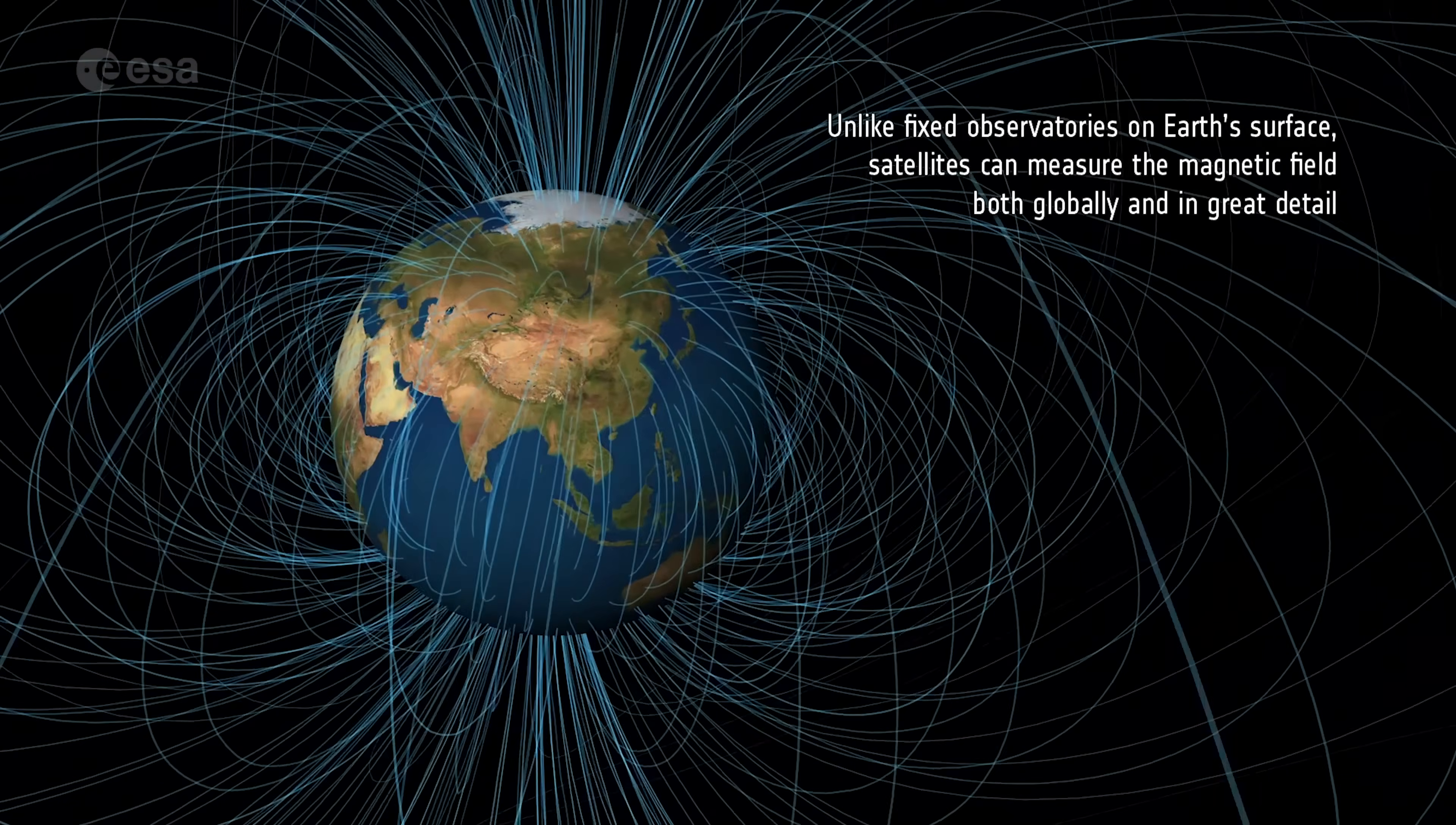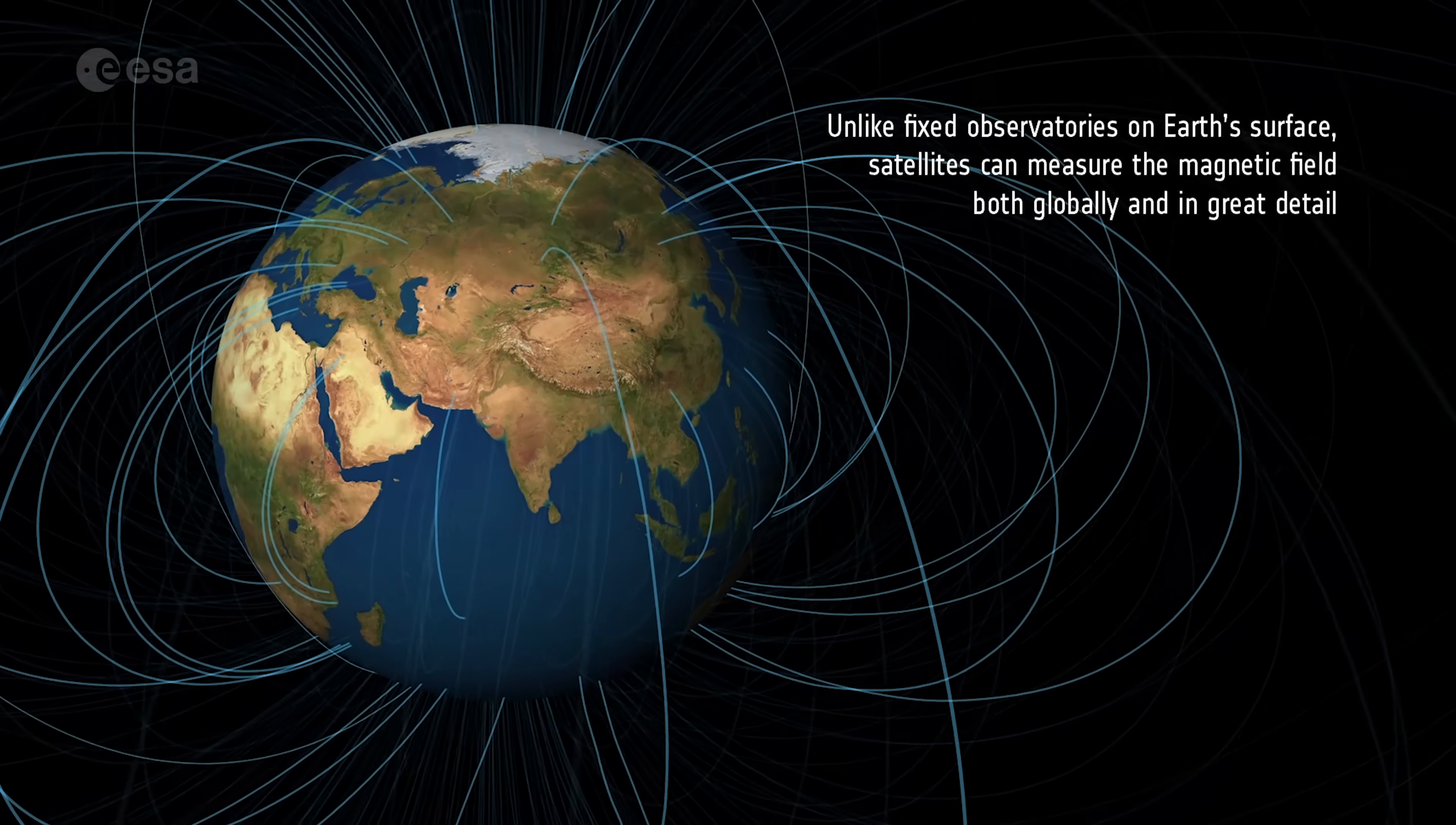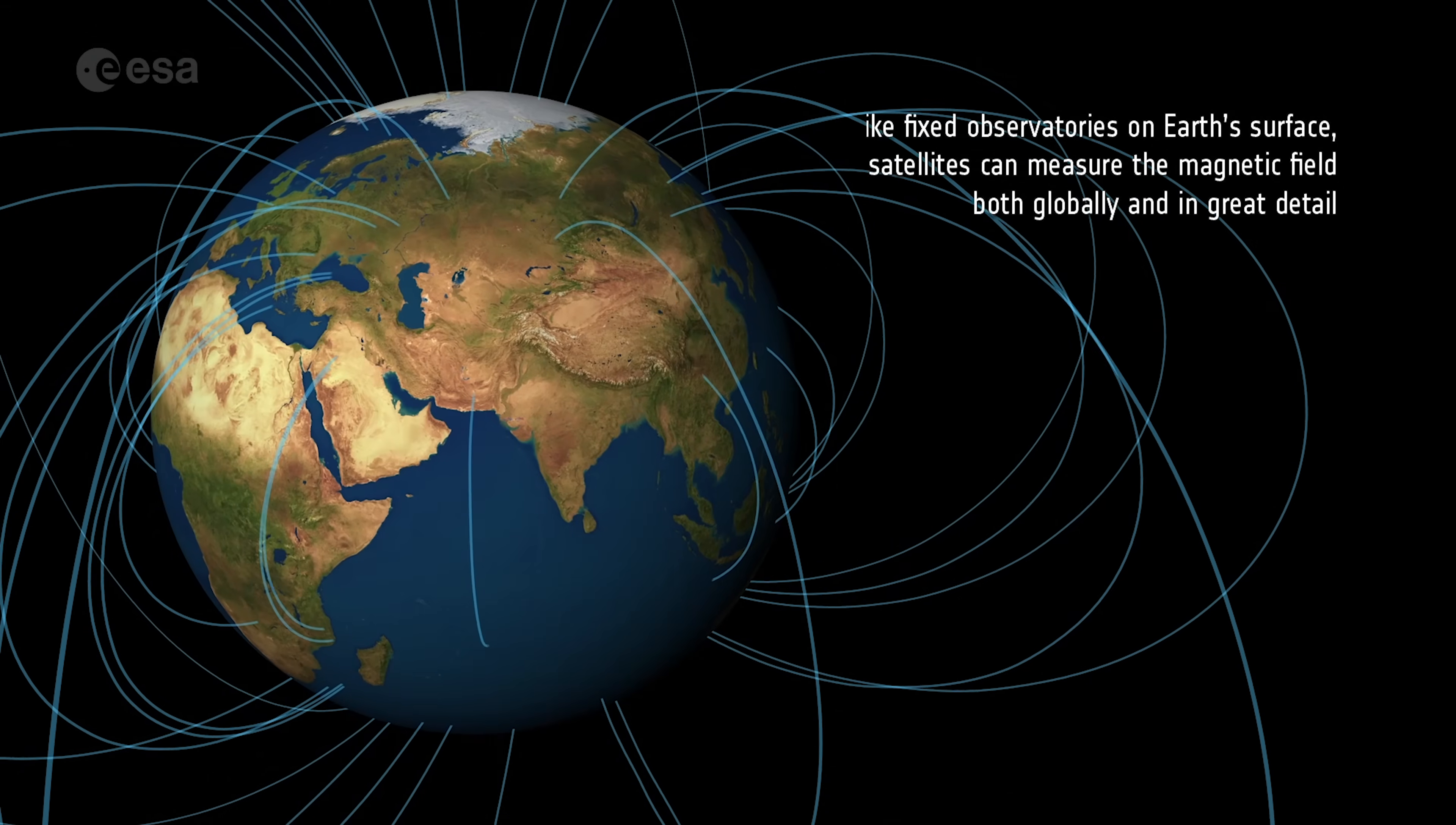Unlike fixed observatories on Earth's surface, satellites can measure the magnetic field both globally and in great detail.